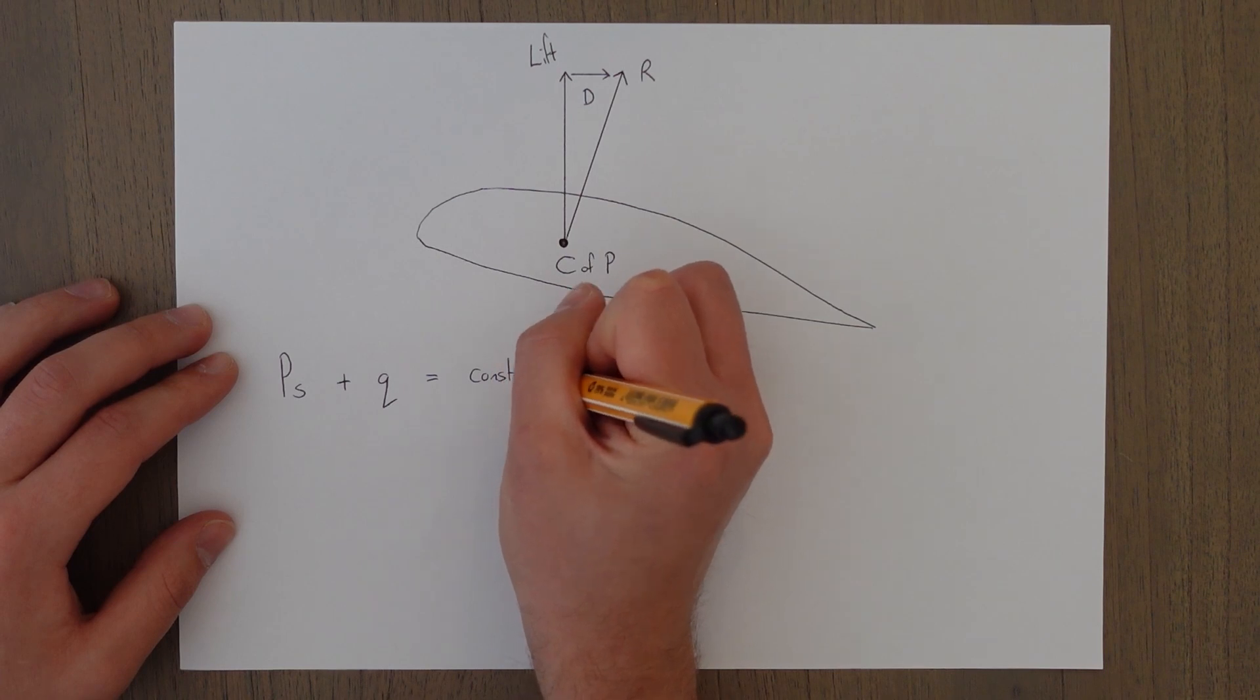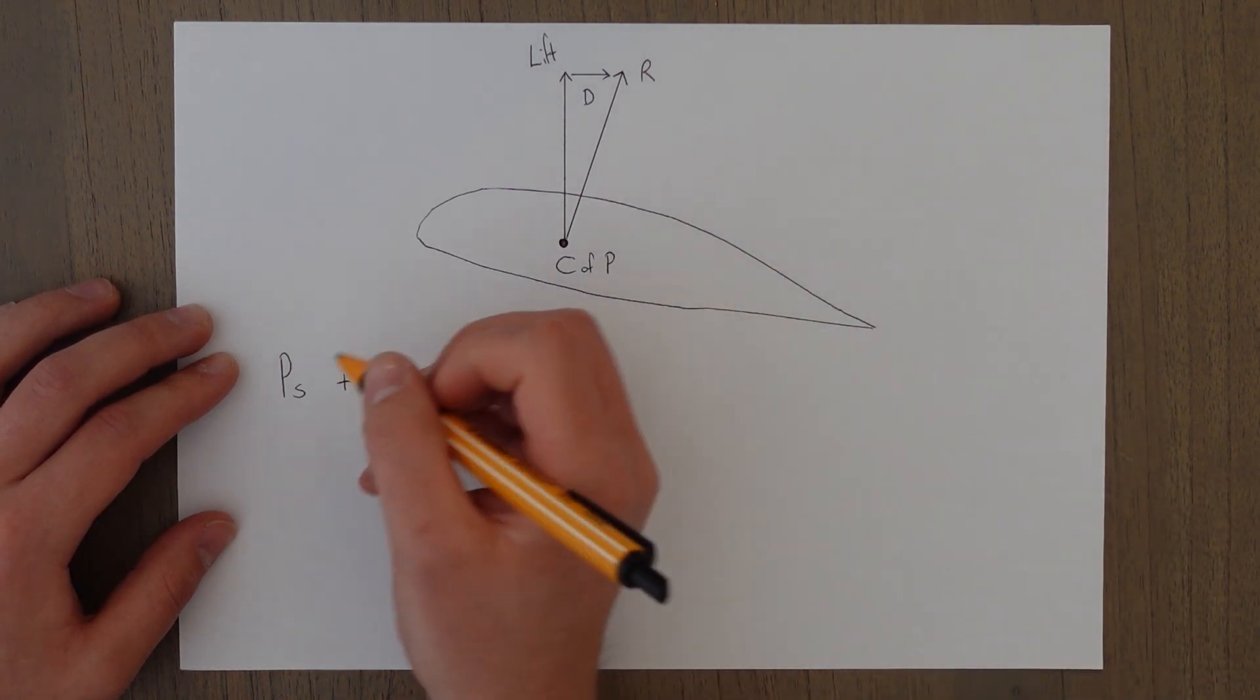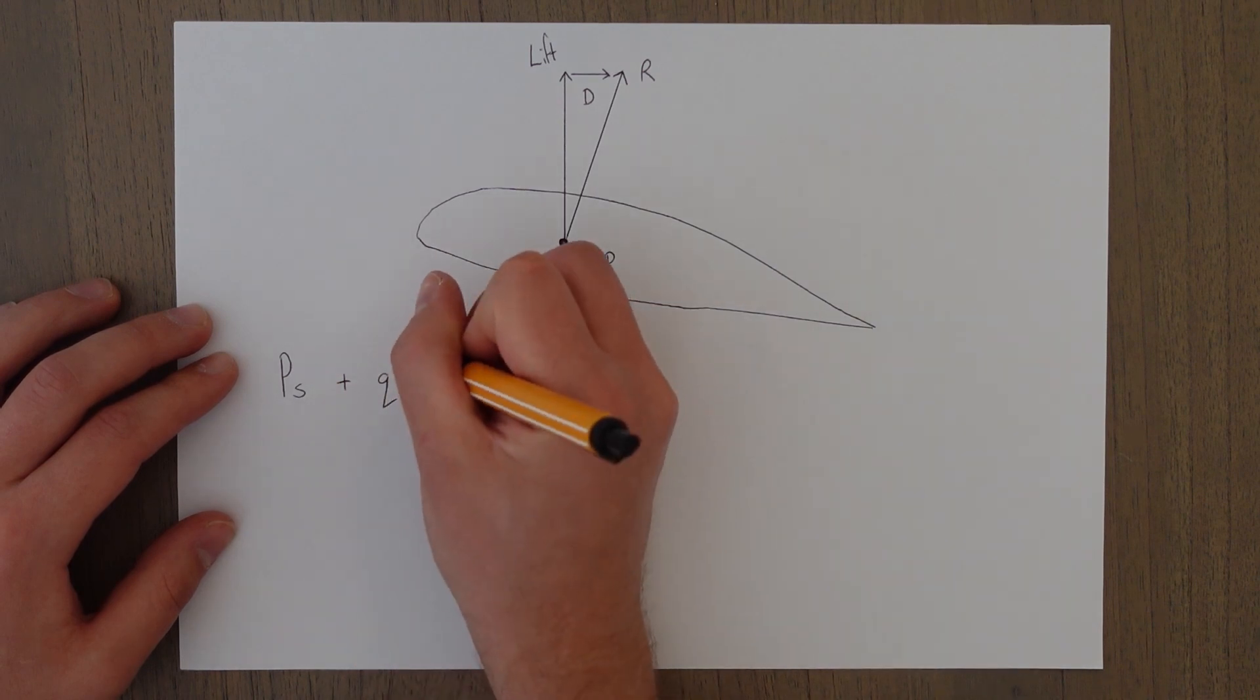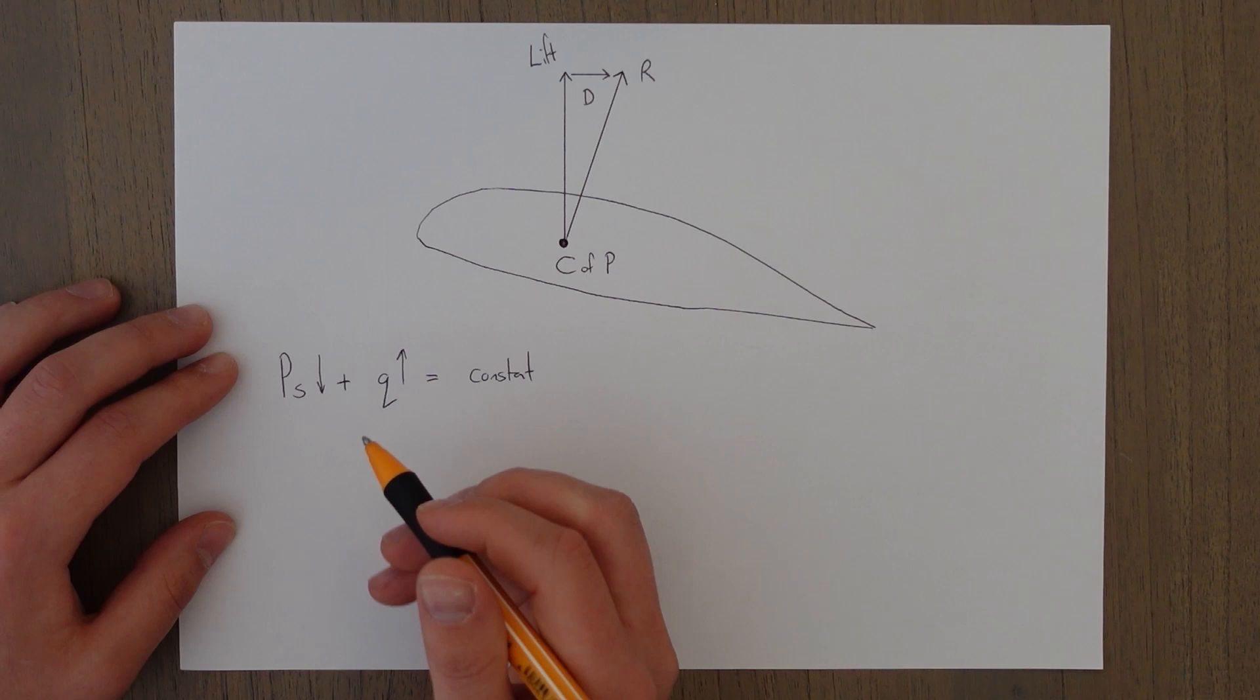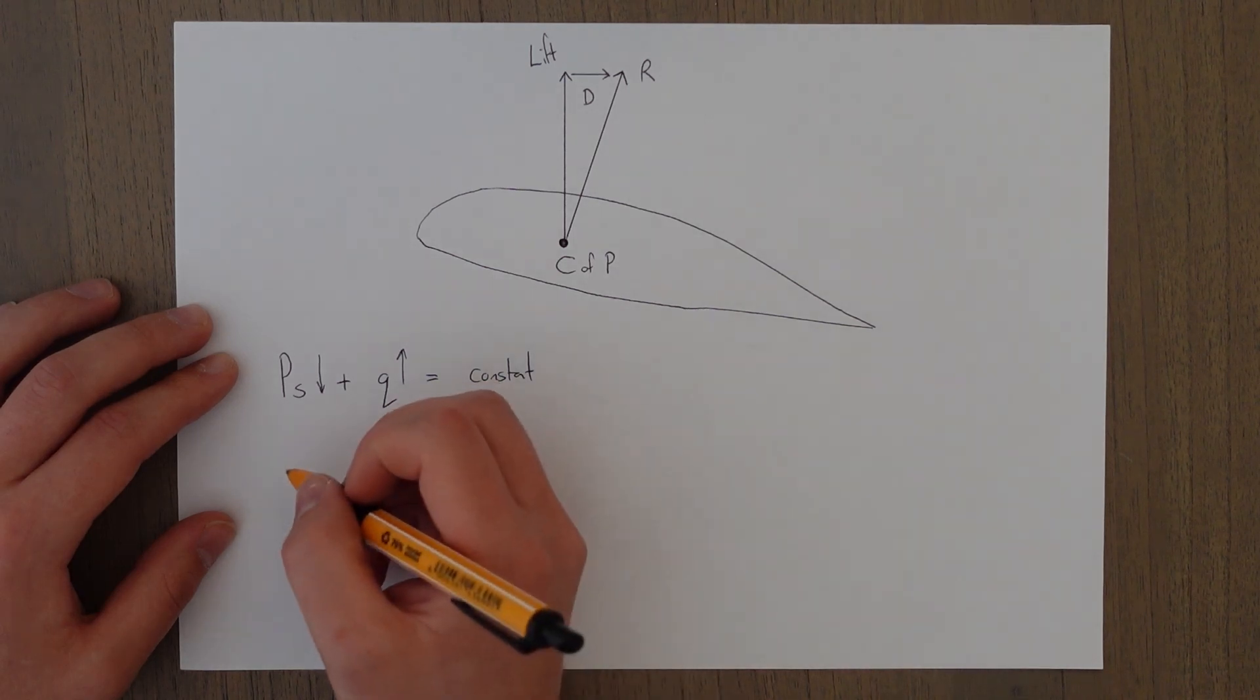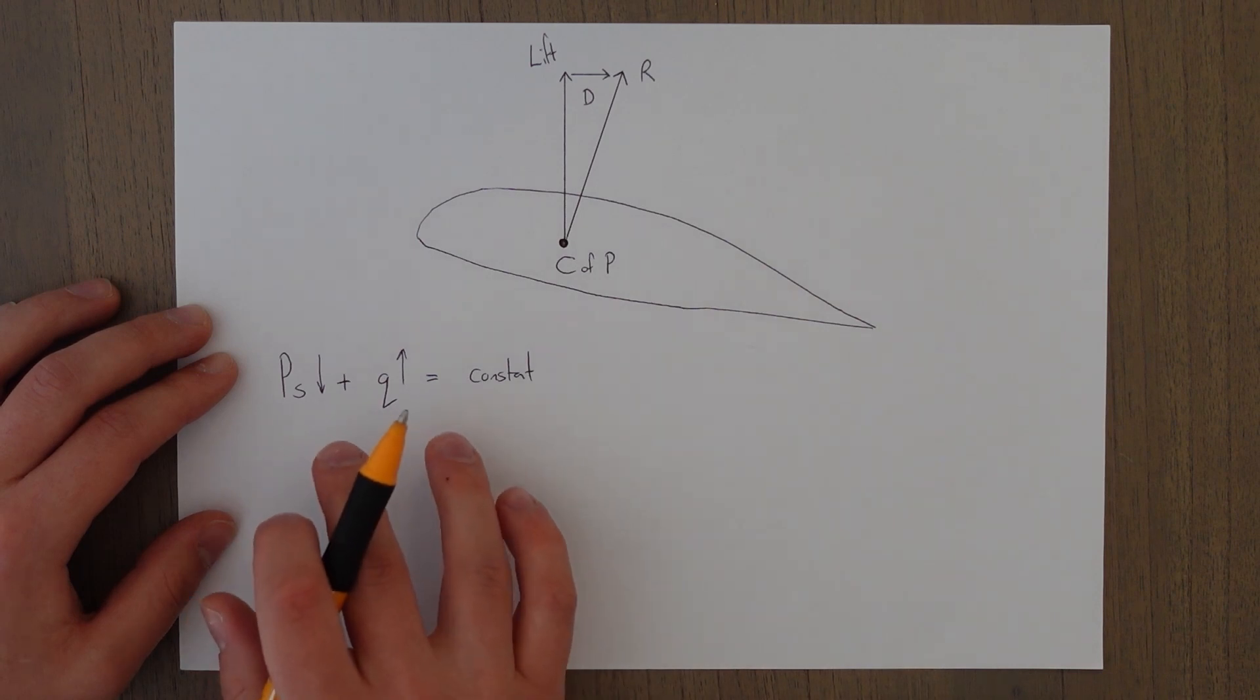we know that if we increase the speed we reduce the static pressure, which means that our pressure differential is greater and therefore there's a larger resultant force. This is what we covered in the previous class.